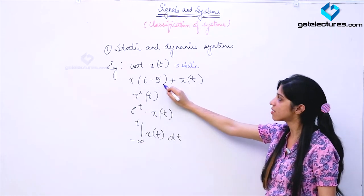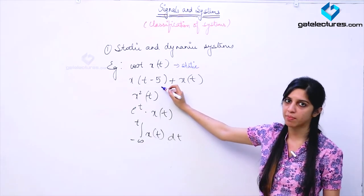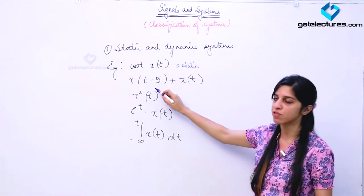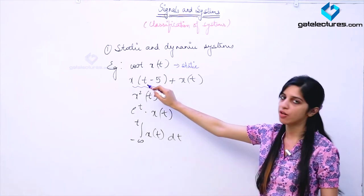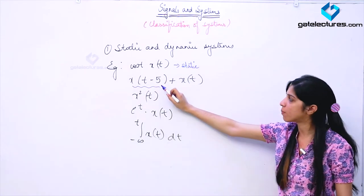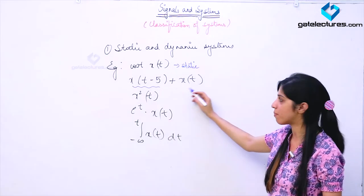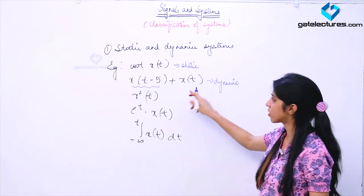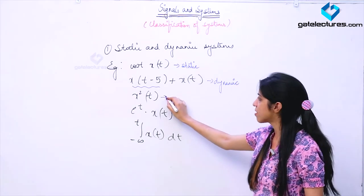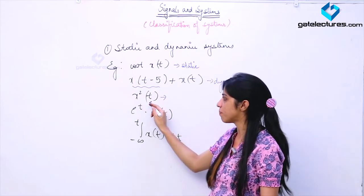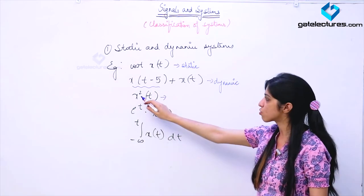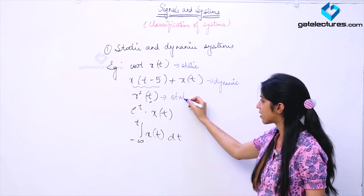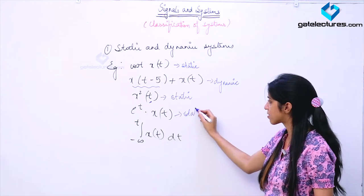Look at the second example. This system must have an arrangement of memory since its output depends on a value of input which occurred in the past — which occurred at T minus 5, a past value of input. Since the output depends on some past value of input, this must have an arrangement of memory and this is going to be a dynamic system. The first example is a memoryless system because the output depends only on the present value of the input. Although this is not a linear system, right now we are just talking about static and dynamic — so this is going to be a static system. Similarly, this is also going to be a static system.